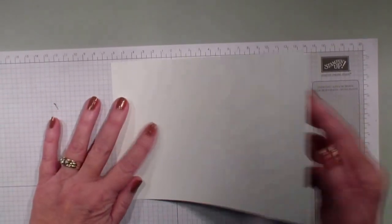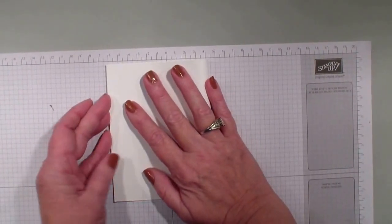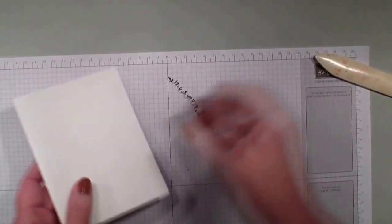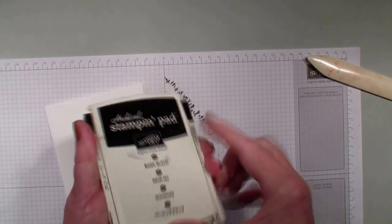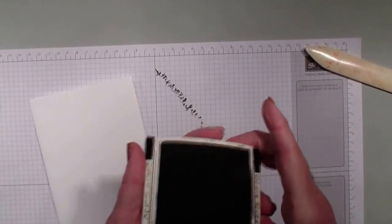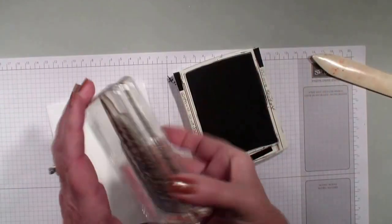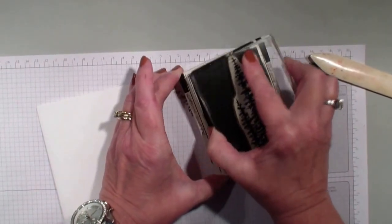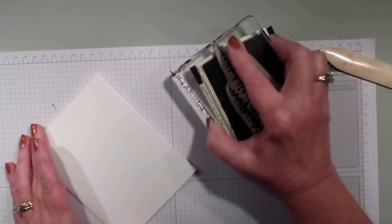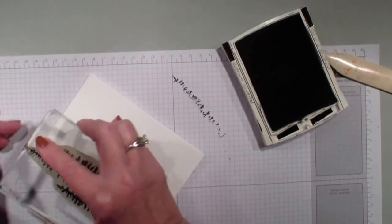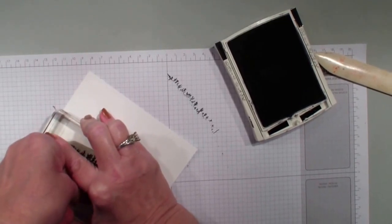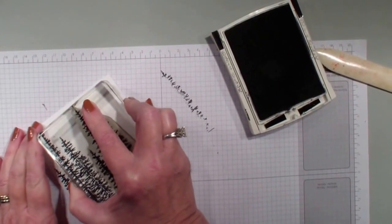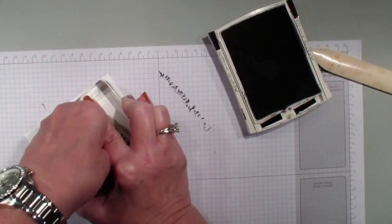I'm going to take a half sheet of cardstock, this measures 5 1/2 x 8 1/2. I'm going to bring in my archival black ink pad and the pine trees from the Wonderland stamp set. I just want to ink them well and I'm going to stamp them across the front of my card, just about three times.